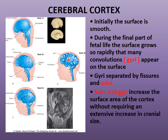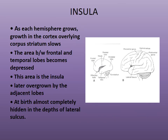The sulci and gyri increase the surface area of the cortex without requiring an extensive increase in cranial size. Initially the surface is smooth, and later these sulci and gyri — the elevations and depressions — appear on the surface to increase the surface area of the cerebral hemispheres.